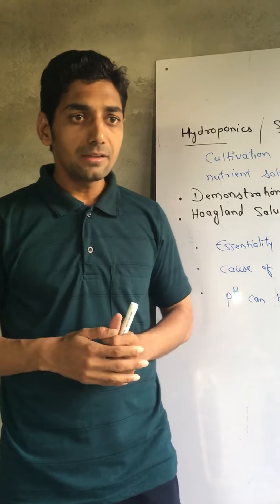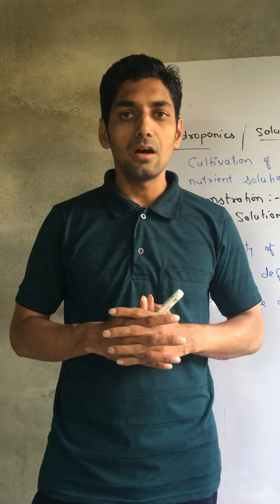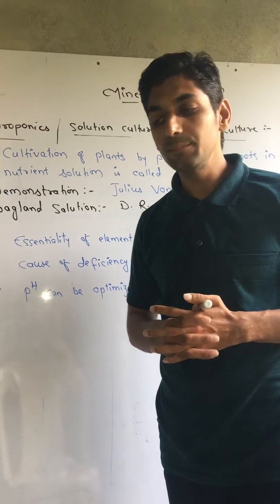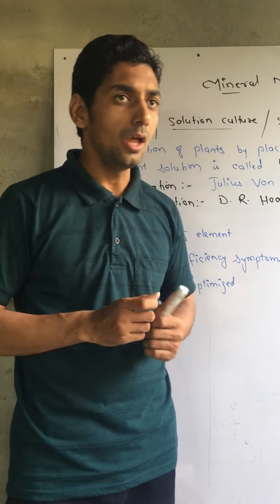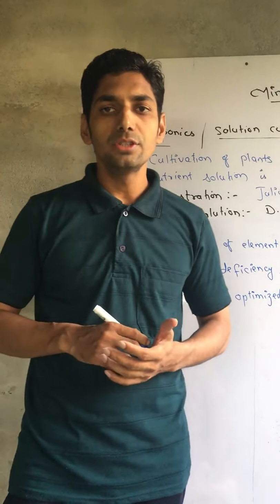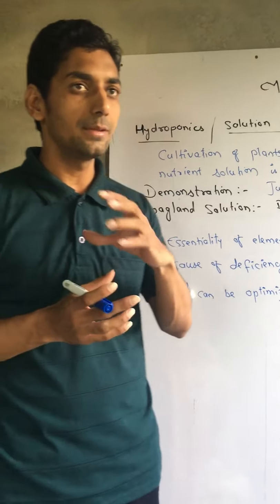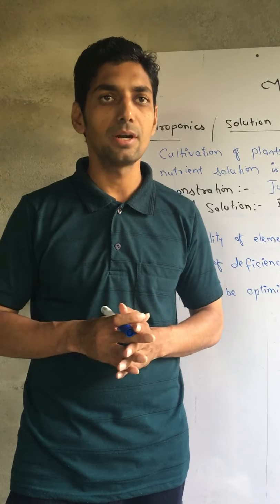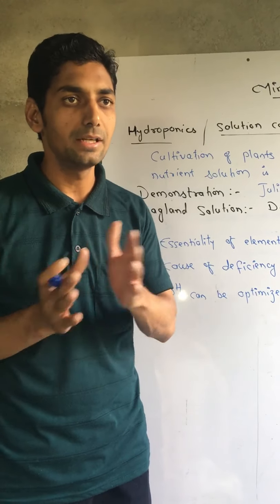In the previous class, we discussed that if essential elements are low in plants, then plants morphologically show some symptoms and give some indications. The indications that plants morphologically show are what we call deficiency symptoms. Because of the deficiency of a particular element or group of elements, the plant morphologically indicates some symptoms — those are the deficiency symptoms.